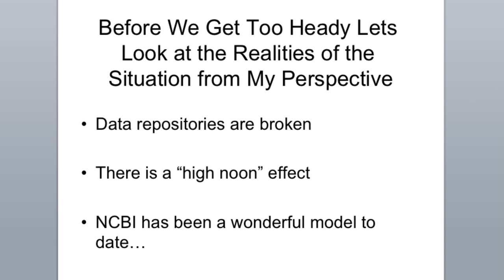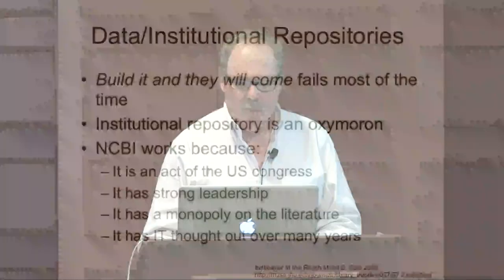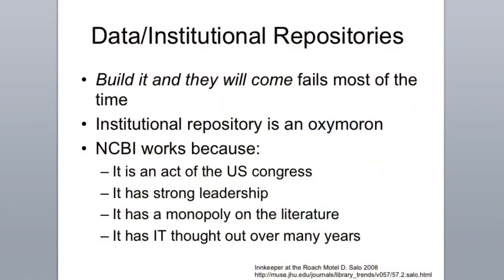The idea that repositories are institutionalized is a problem in itself — they should be global. NCBI kind of works because it's well funded, it has strong leadership, it has monopoly on some of these things, and it thought through the IT aspects long ago. It takes resources and strong leadership. It needs institutional support really behind the repository to make a difference. I would say there's also this high noon effect. Some of you remember the days of the VCR, where nine times out of ten you'd look under the TV set and there was their VCR flashing twelve — no one ever went to the trouble of programming it. The barrier to entry was just too high. DVRs changed that. We need to move from the VCR era to the DVR era with respect to institutional repositories.